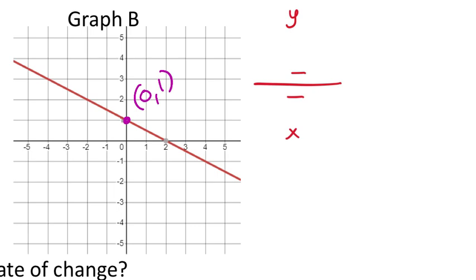I need another ordered pair for the slope formula. X = 0 goes on the bottom, y = 1 goes on the top. The order of these does matter—it's always x and y, with x on the bottom and y on the top. I found the y-intercept but still need some other ordered pair.